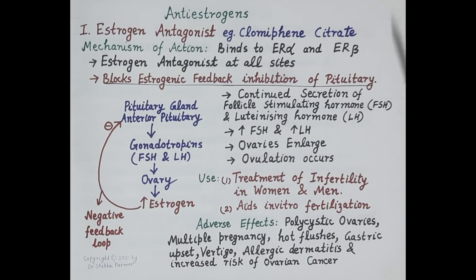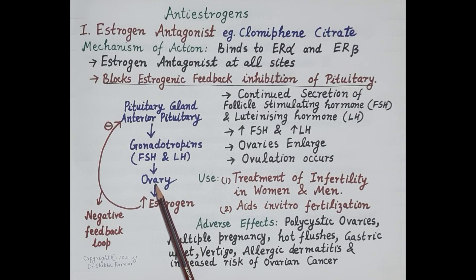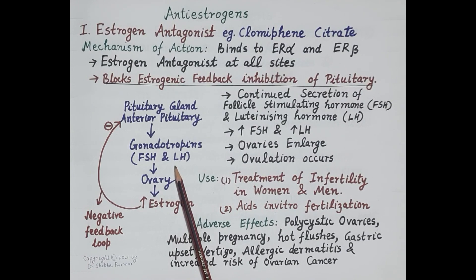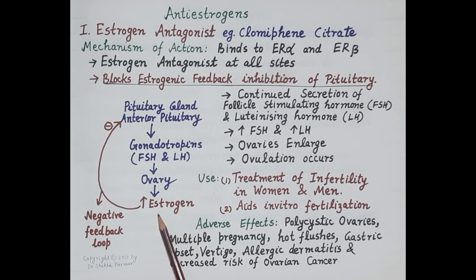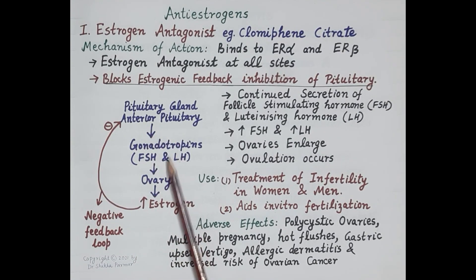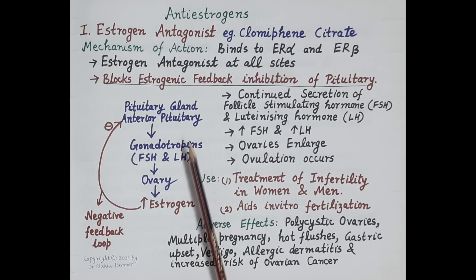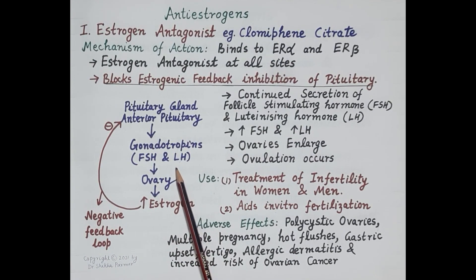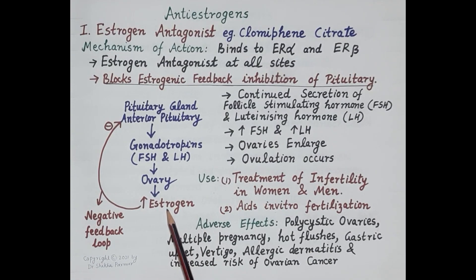Now let's discuss pharmacology of each category one by one, starting with the estrogen antagonist clomiphene citrate. This diagram depicts the pituitary-ovarian axis. The anterior pituitary produces gonadotropins — FSH and LH — which stimulate ovaries to produce estrogen. Increased estrogen levels send negative feedback signals to the pituitary, inhibiting release of FSH and LH, thereby inhibiting estrogen release from the ovaries.